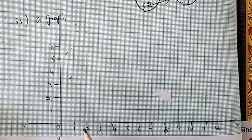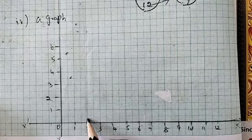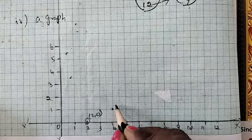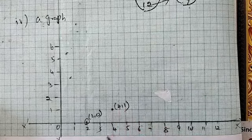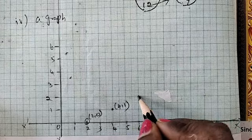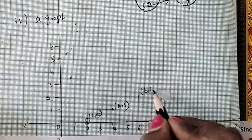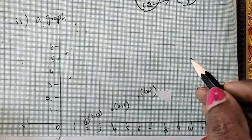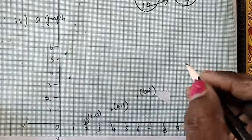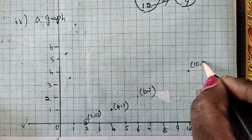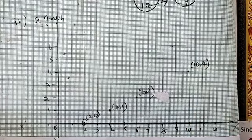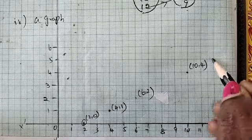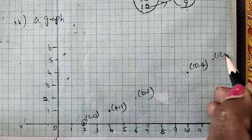Now plotting: 2 equal to 0, so mark (2,0). Next 4 equal to 1, mark (4,1). Then 6 equal to 2, mark (6,2). Next 10 equal to 4, mark (10,4). Next 12 equal to 5, mark (12,5).